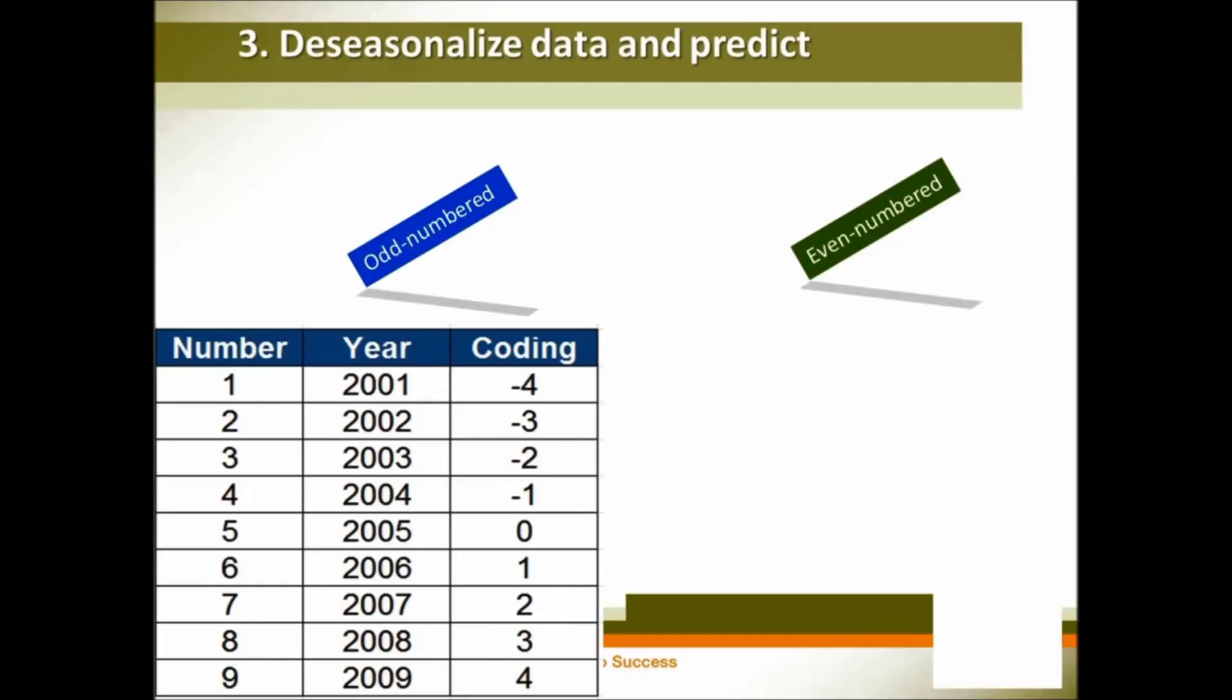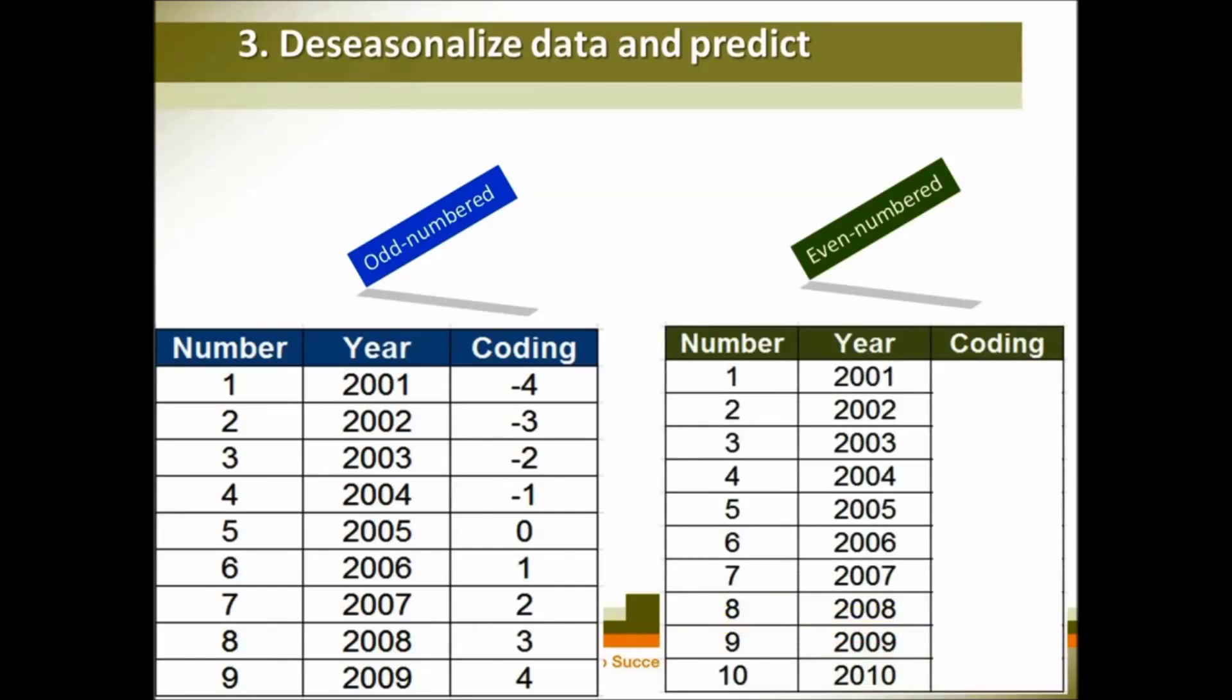And if it is even numbered, suppose we have 10 years like this, then we need to use the middle two numbers as minus 1 and plus 1, and then minus 3 plus 3, minus 5 plus 5, etc.